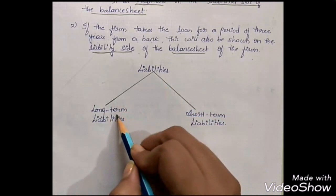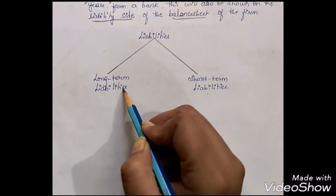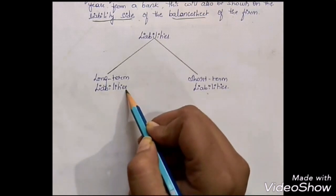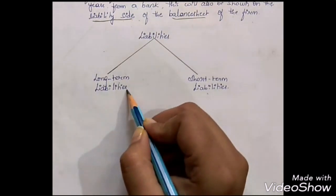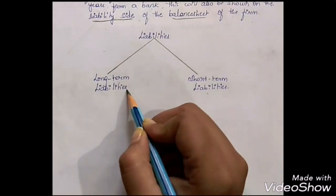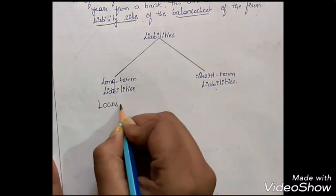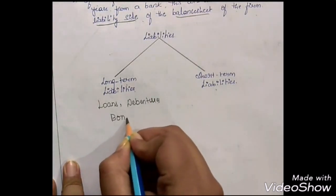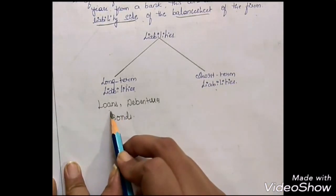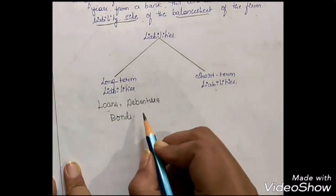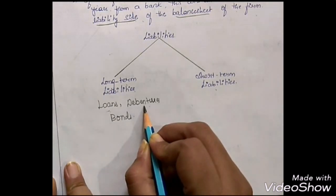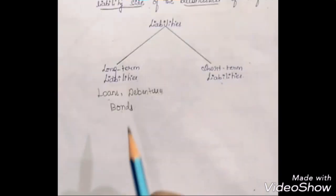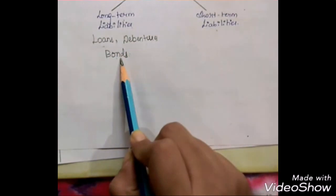Liabilities can be further divided into long-term liabilities and short-term liabilities. Long-term liabilities are those which are usually paid after a period of one year or more. Examples of long-term liabilities include loans taken from a bank or monetary institution, debentures issued by the company when facing a capital deficiency, and bonds issued to the general public to collect the required capital.